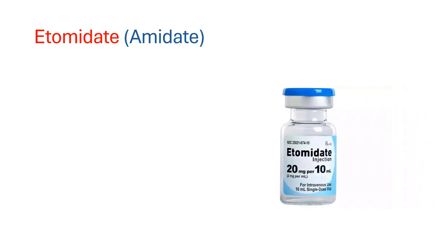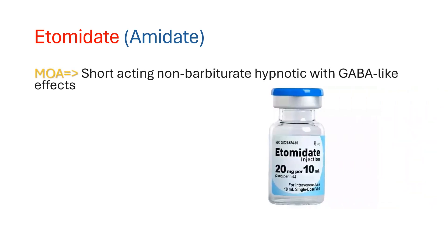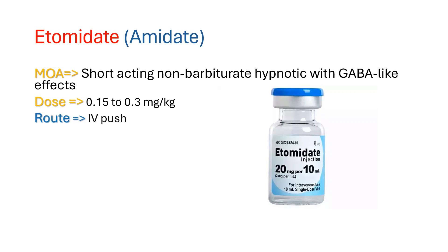The most commonly used induction agent is etomidate. Etomidate is a potent short-acting non-barbiturate sedative hypnotic without analgesic properties. It depresses central nervous system function by enhancing the effects of GABA receptors. It is administered at a dose of 0.15 to 0.3 mg per kg IV push, with a 30 to 60 second onset of action and a duration of 3 to 5 minutes.